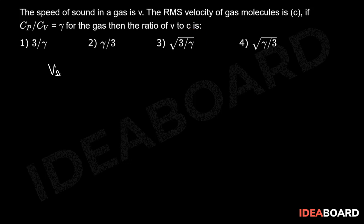We know that velocity of sound v_sound is equal to v, and that can be written as gamma p by rho from the Laplace equation. So v_rms can be written as c, and that will be equal to 3 p by rho.